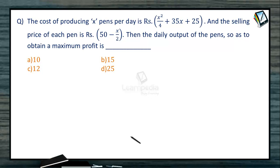This is an application of maxima and minima in industries. The cost of producing x pens per day is rupees x²/4 + 35x + 25, and the selling price of each pen is 50 - x/2 rupees. Then the daily output of the pens so as to obtain a maximum profit.